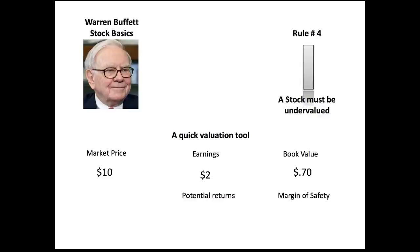When we looked at Nancy's ice cream stand from the previous lessons, we divided it into 10,000 shares. Because she was asking $100,000 for the business, the market price per share was $10. Her net income was $20,000, so divided by shares, her earnings were $2 a share. And the $7,000 in equity from her balance sheet, divided by 10,000, gave us 70 cents in book value. These were the important terms from the first four lessons, and Buffett's quick evaluation tool wraps all three into one quick assessment.